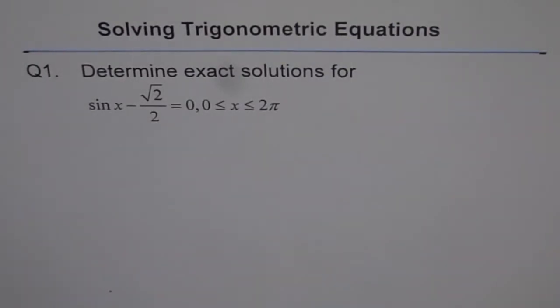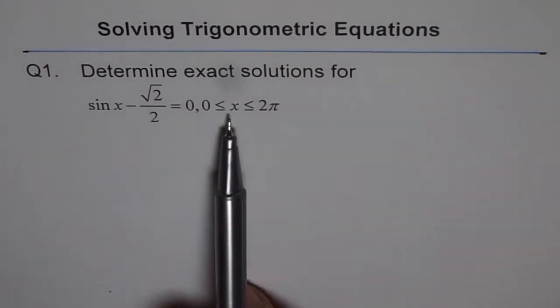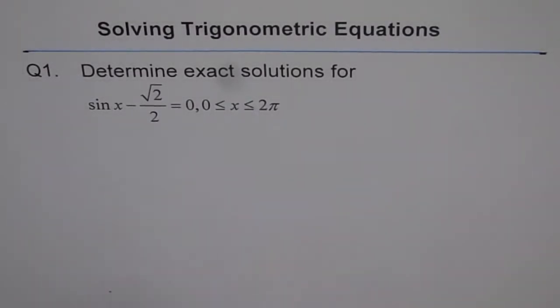Solving trigonometric equations. Question 1. Determine exact solutions for sin x minus square root 2 over 2 equals to 0, where x is between 0 to 2π, both included.